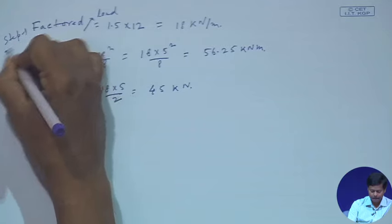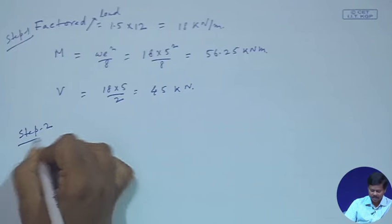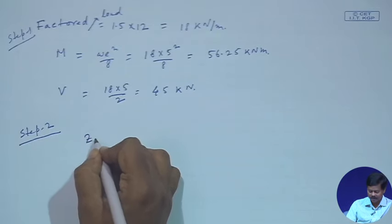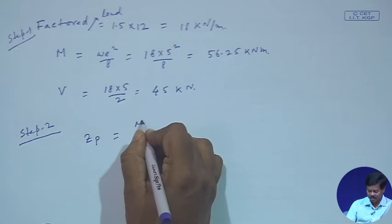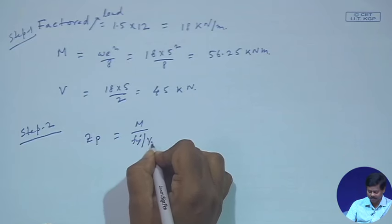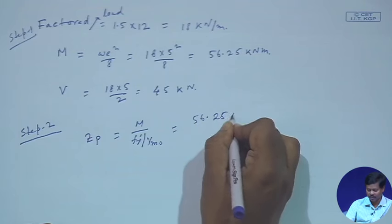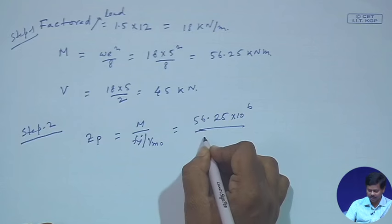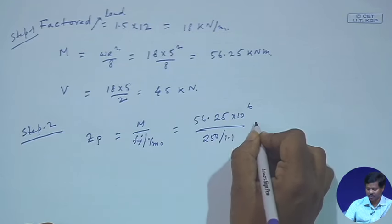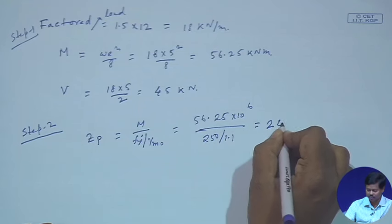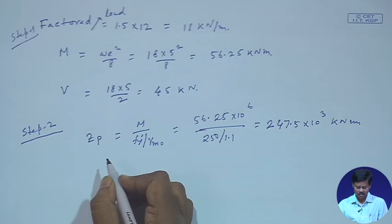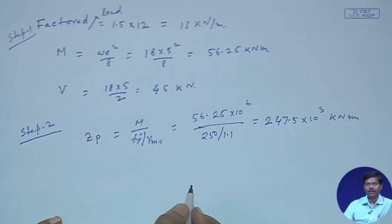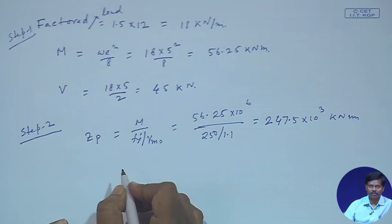This is step 1. In step 2 we find a trial section. We calculate the approximate plastic section modulus as Z_p = M / (f_y / γ_m0). With M = 56.25 kN·m, f_y = 250 MPa, and γ_m0 = 1.1, the required plastic section modulus is 247.5 × 10³ mm³. This is calculated considering the beam as laterally supported.